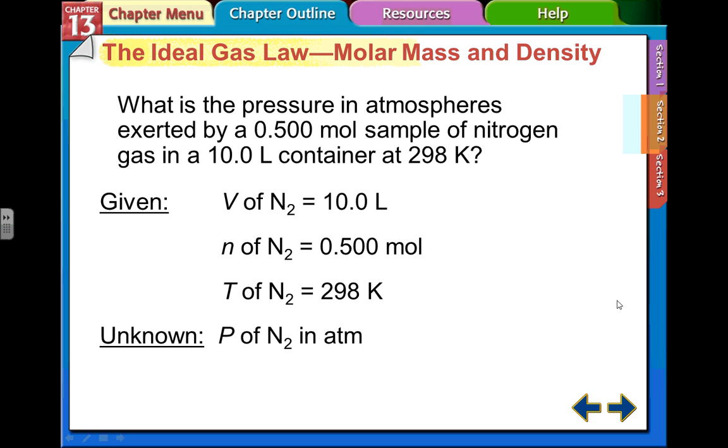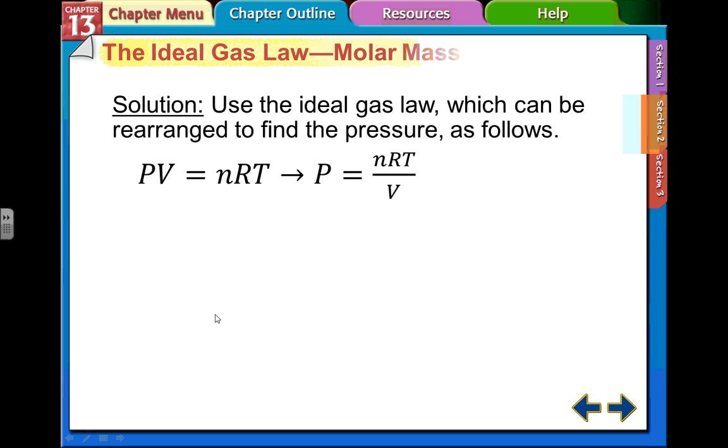Okay, so practice problem here, what's the pressure in atmospheres exerted by a 0.500 mol sample of nitrogen gas in a 10 liter container at this temperature. So we have the volume, we have the temperature, we have moles, and we want to know what the pressure is. So we have three out of our four variables here. We're trying to find the one we don't know. So we have V, we have N, we have T, and we have P. So notice we don't have the before and after like we did on the ideal gas law. We just have one of each of these things, and we're trying to figure out the one that they didn't give us. We have four variables, one constant. They gave us three of the variables and left us to figure out what the other variable was.